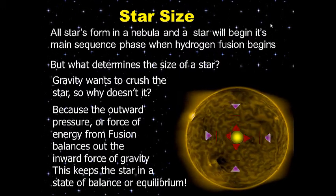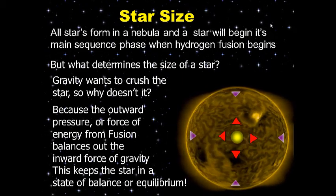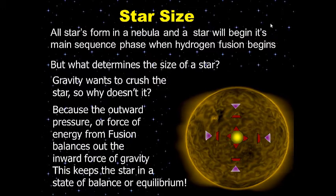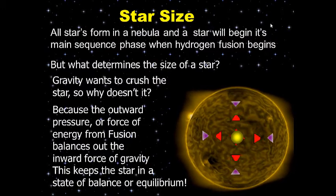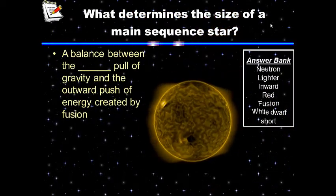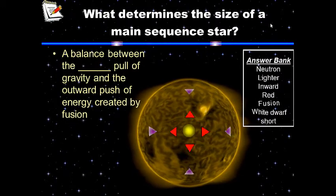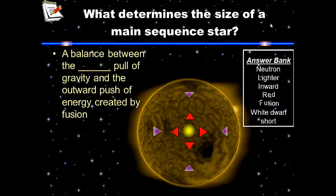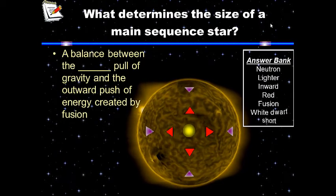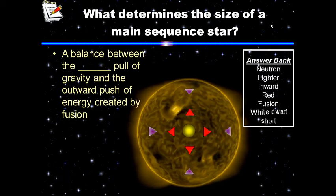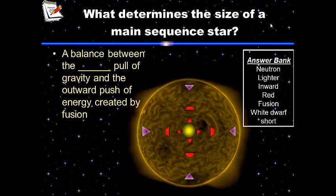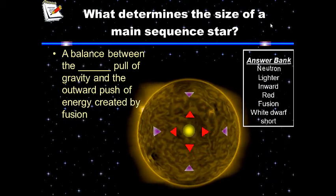Gravity wants to pull the star in; fusion wants to push the star back out. This balance determines the size of a star like our Sun. For your notes, write the question in the question section: a balance between the blank pull of gravity and the outward push of energy created by fusion. Use the answer bank to complete the sentence, and go ahead and pause to write this down.